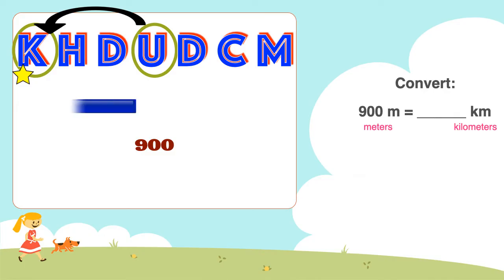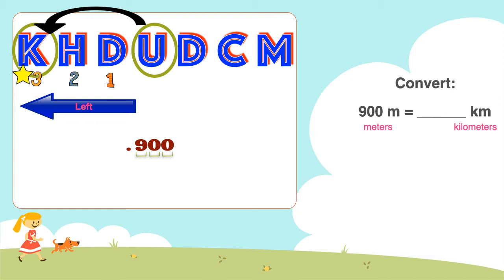In moving from U to K, we move one, two, three spaces to the left. So looking at the number 900, we move our decimal point three spaces to the left. In a whole number, the decimal point is found at the back of the number. If we move it one, two, three spaces to the left, our decimal point is now in the front of the number 900. That changes the number completely. Our number is now 0.900, or 900 thousandths.